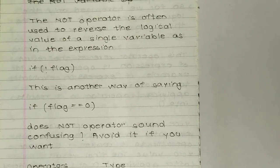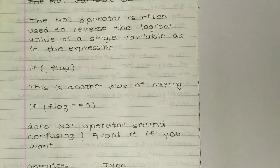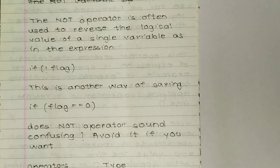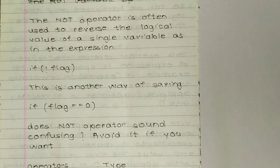The NOT operator is often used to reverse the logical value of a single variable. For example, the expression 'if (!flag)' is another way of saying 'if flag is equal to zero.' If the NOT operator sounds confusing, you can avoid it if you want.